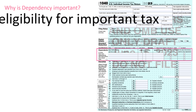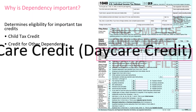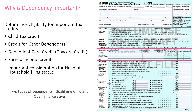So why do we care about dependency? Well, dependency is important for establishing whether a client will qualify for a few different tax benefits. Dependency is most directly involved with the child tax credit, credit for other dependents, and dependent care credit. Dependency is closely related to the earned income credit as well. As we discussed in the last section, dependency can also be an important consideration for determining if someone qualifies to file as head of household or less commonly as a qualifying surviving spouse.